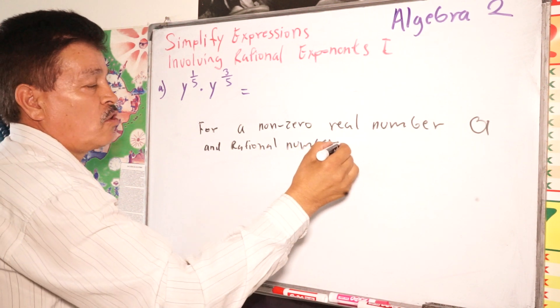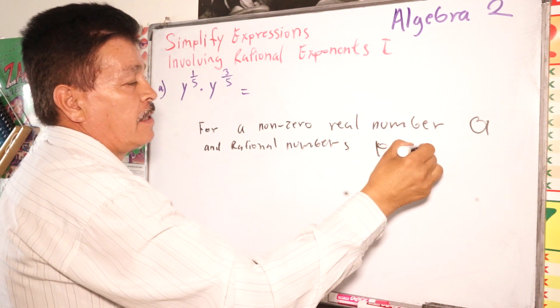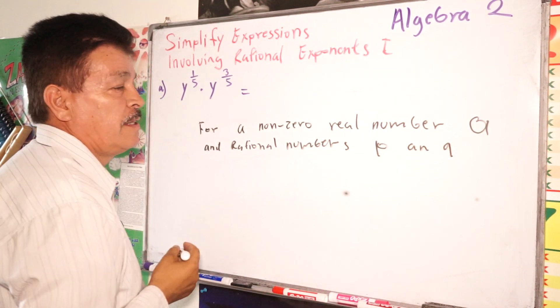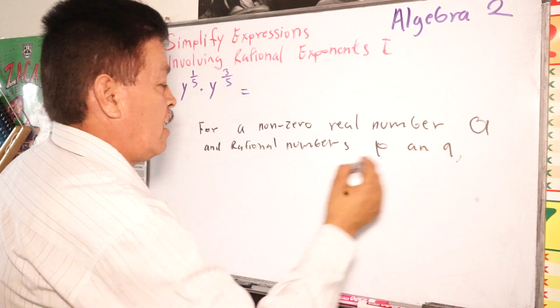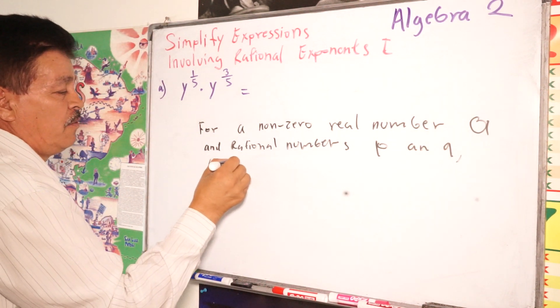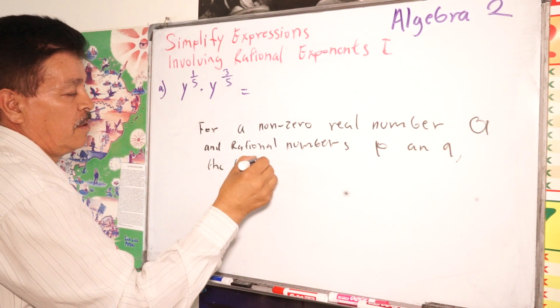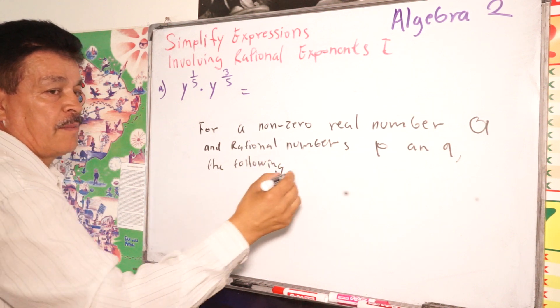There are some numbers, P and Q. The following identities.